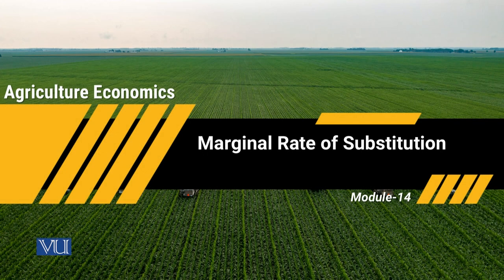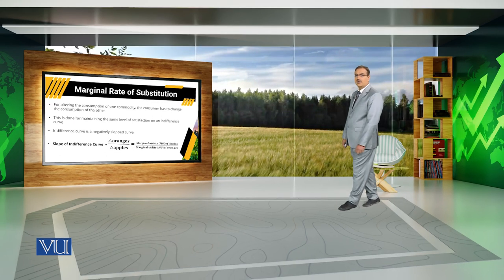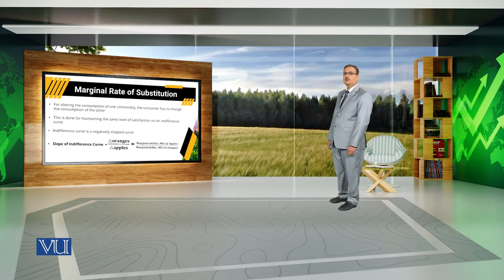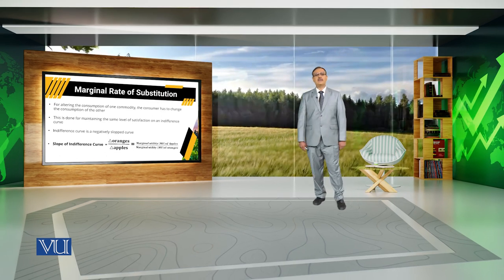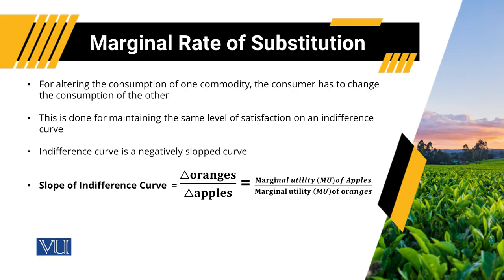Module 14: Marginal Rate of Substitution. Along an indifference curve, altering the consumption of one commodity requires the consumer to change the consumption of the other commodity. This is done while maintaining the level of satisfaction of the consumer unchanged.